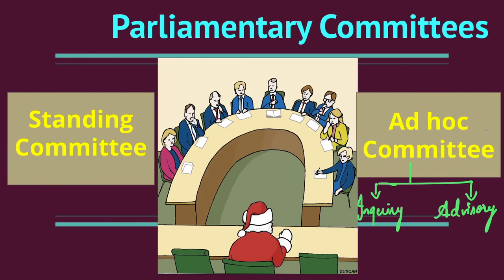Ad hoc committees are further divided into two types: inquiry committees and advisory committees. Inquiry committees are constituted from time to time either by the two houses or by the speaker or chairman to inquire into and report on specific subjects — for example, the Railway Convention Committee, Joint Committee on Stock Market Scam, Joint Committee on Security in Parliament Complex, etc. Advisory committees include select or joint committees on bills, which are appointed to consider and report on particular bills when a bill comes up before a house and is referred to a select or joint committee.